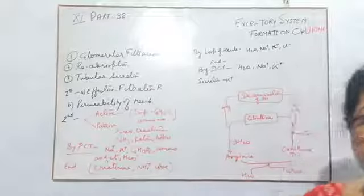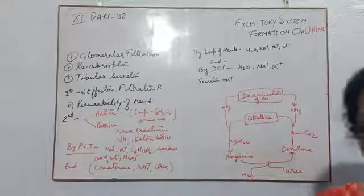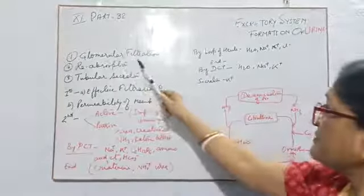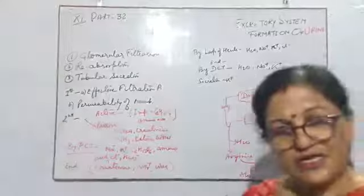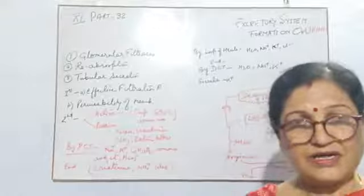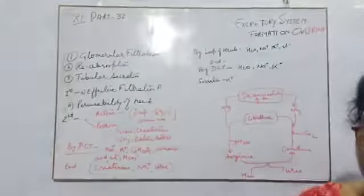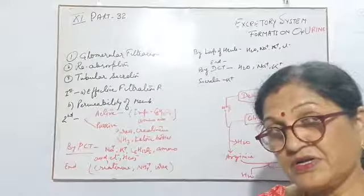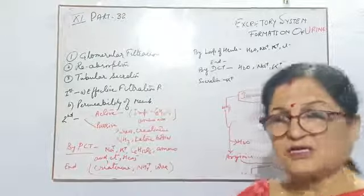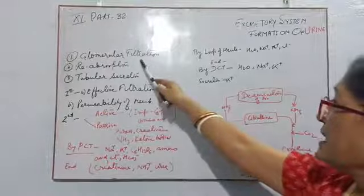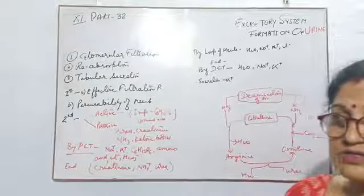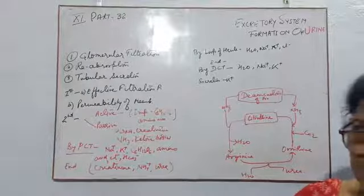The formation of urine takes place with the help of three steps. The first step is glomerular filtration, which means filtration takes place with the help of the glomerulus. The efferent arteriole carries unfiltered blood along with waste and some excretory products, and all of this is filtered in the glomerulus and Bowman's capsule.